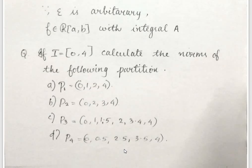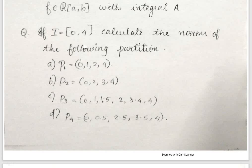The questions are simple. Calculate the norm for the following partition: {0, 1, 2, 4}. The norm is the length of the largest subinterval. The intervals are [0,1], [1,2], [2,4] with lengths 1, 1, 2 respectively, so the norm is 2. For partition {0, 2, 3, 4}, the lengths are 2, 1, 1 and the norm is 2. For another partition, sub-interval lengths include 0.5, and lengths 3.4 and 0.6 are noted.